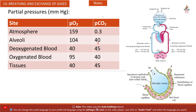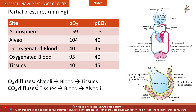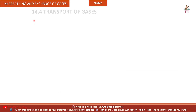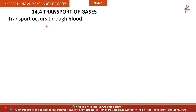Deoxygenated blood has pO2: 40, pCO2: 45. O2 diffuses from alveoli to blood and then to tissues. CO2 diffuses from tissues to blood and then to alveoli. Transport of gases occurs through blood.